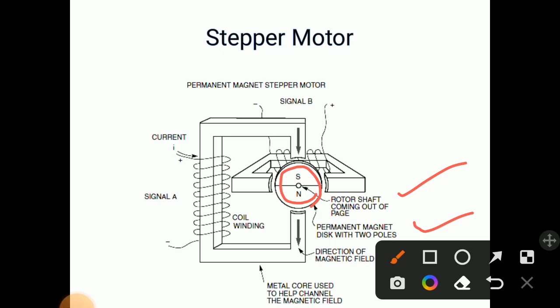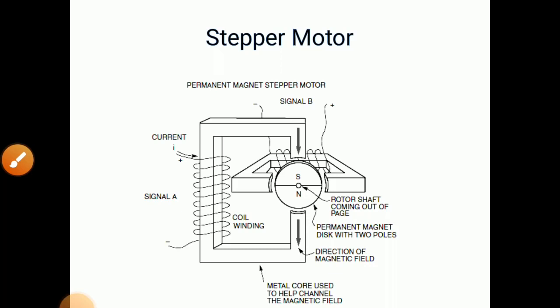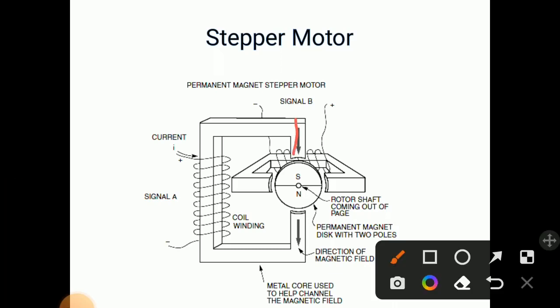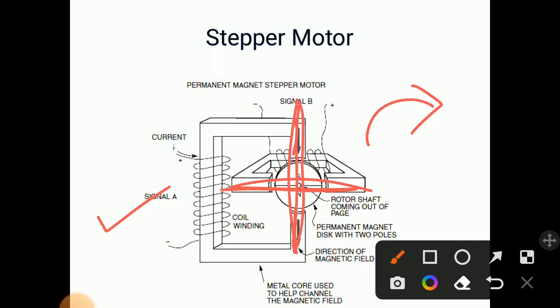We have to actuate the signals one by one — signal A and signal B. As we actuate signal B or signal A, the rotor tries to move towards that signal. Suppose we actuate signal B; the rotor tries to maintain the minimum reluctance position in that direction. When we give signal to A, it tries to come to the horizontal position. So when signal B is given, it is vertical; when signal A is given, it takes horizontal position — that is how the stepper motor works.